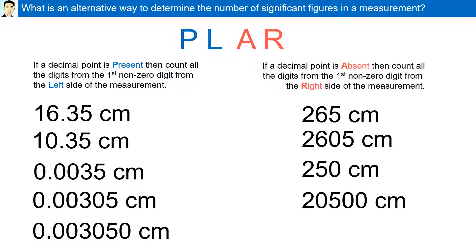For example, 16.35: a decimal point is present, so we count from the left side. The first non-zero digit is 1, therefore everything after that is significant. Similarly, 10.35: a decimal point is present, so we come from the left. The first non-zero digit is 1, everything is significant — 4 significant figures.